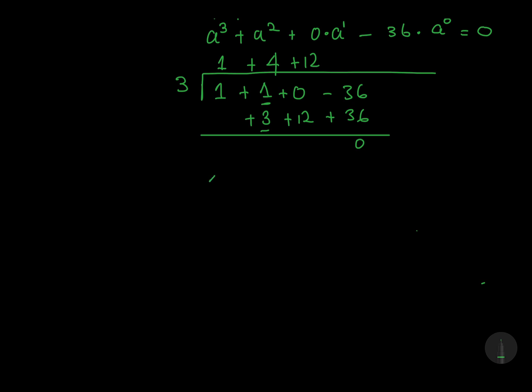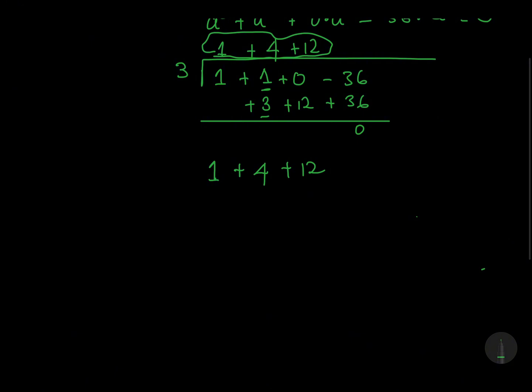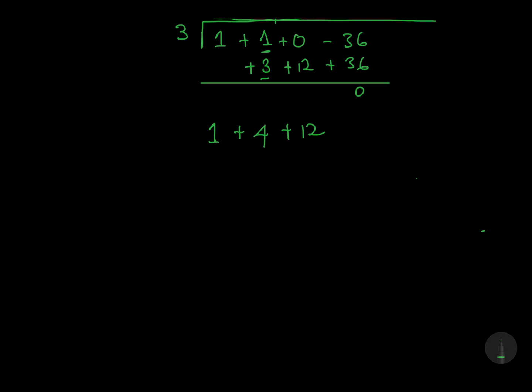So, the way that I'm going to do this is to copy this downward, what we found here. From here, because we have already found one root, we are left with other roots. So, we must start with the highest power of 2. So, we'll have 1·a² + 4a + 12 = 0.